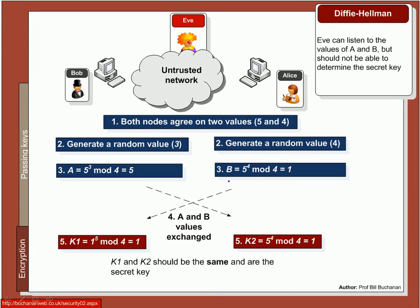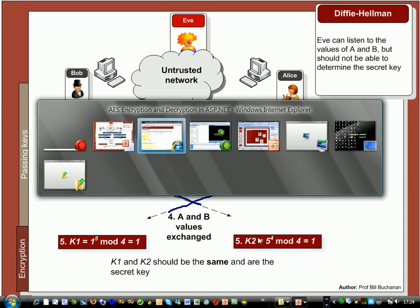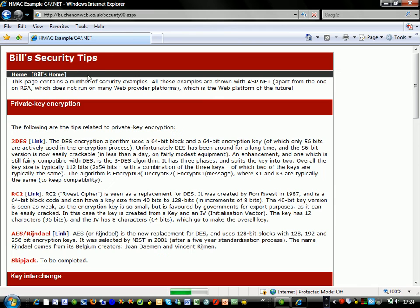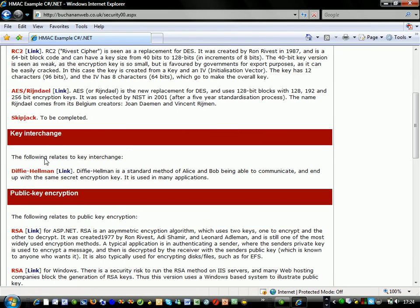As an example, we can see here 5 and 4 are the values. They generate 3 and 4, and the value 5 gets generated, then 1. They pass those values and end up with the same key. If we look back, we should see an example of Diffie-Hellman.